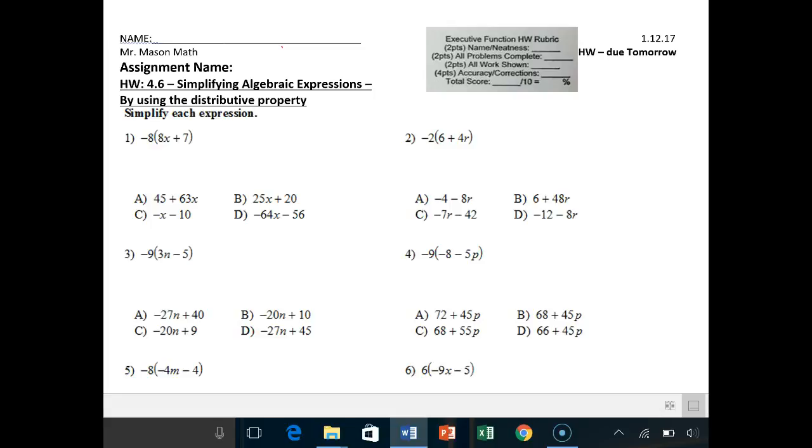Hey there, CJ Math Students. I'm going to help you out with homework 4.6. Key thing tonight, remember your integer rules: different signs negative, same signs positive. So a negative and a negative gives you a positive, but a positive and a negative gives you a negative.